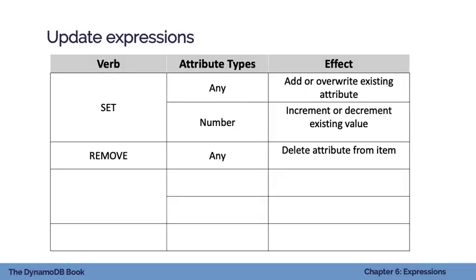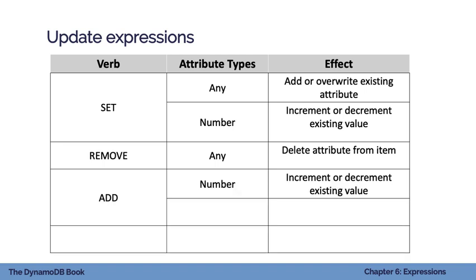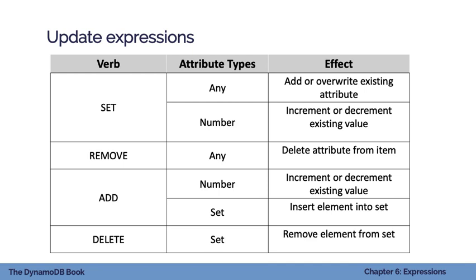The remove verb is basically the opposite of set — it deletes an attribute from an item. The add verb works on number types to increment or decrement, though the DynamoDB docs actually recommend using set instead of add for numbers. The add verb is more useful for inserting a new element into a set attribute type. Finally, the delete verb only operates on the set type and removes an element from a set.